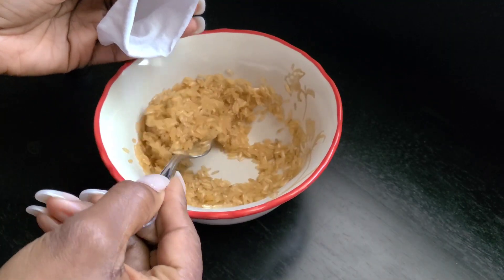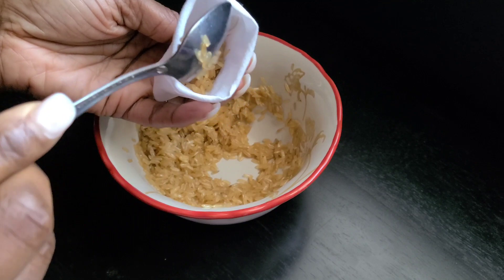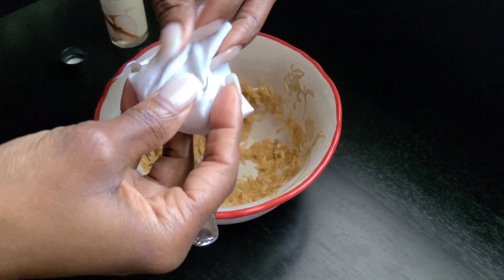I then added about one tablespoon of the rice mixture to the sachet. I gathered it together at the top and closed it up with the ribbon.